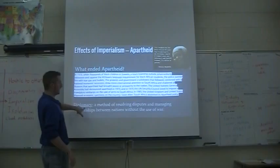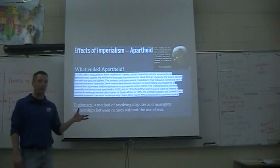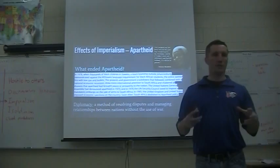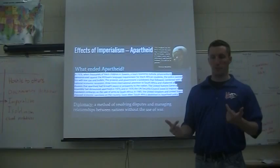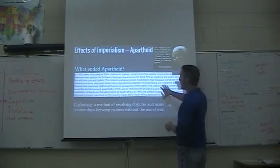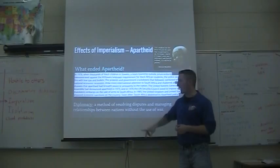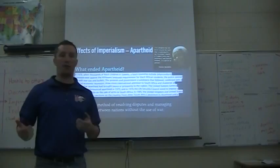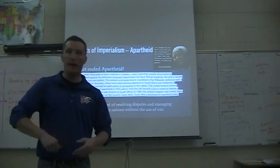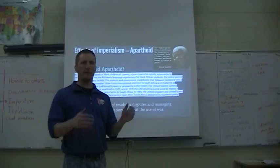So what caused it to end? Diplomacy did — which is a method of resolving disputes and managing relations between nations without the use of war. You need to know that word diplomacy. It's a way to establish relationships and treaties and just talk to other nations without war. The United Kingdom and the United States imposed economic sanctions — basically they refused to buy anything from South Africa, and they refused to allow South Africa to buy anything from them. So South Africa's economy was going down the drain. They were also not allowing South Africa to participate in the Olympic Games.